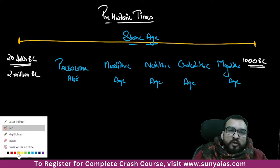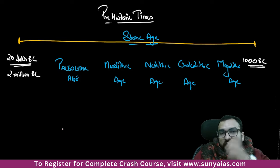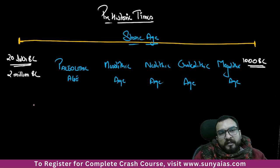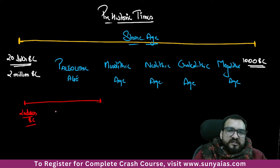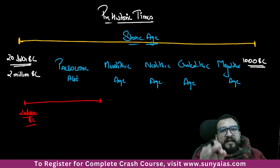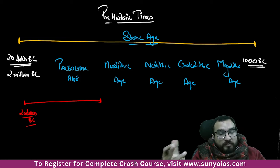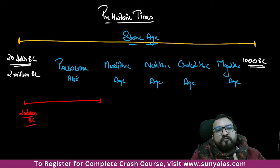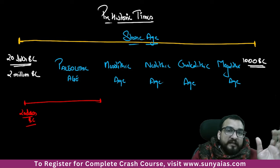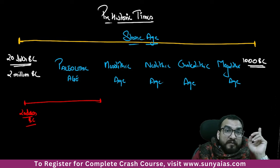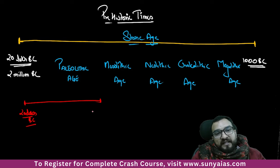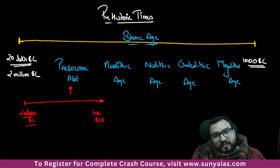Before developing into these topics, fix the timeline. Paleolithic Age: 20 lakh BC to 10,000 BC. Every book will show slightly different timelines, but I want you to keep it fixed so you can remember it in the exam. These timelines are always debatable — we are talking about inferences using words like 'might.' So keep: 20 lakh BCE to 10,000 BCE for Paleolithic.